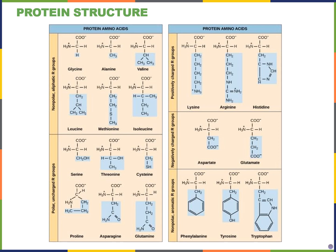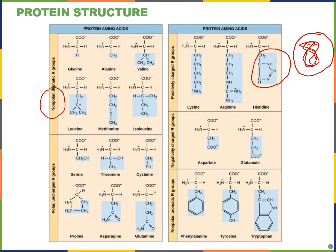Amino acids affect the three-dimensional folding of proteins because of the side chain or R group — shaded in blue for each amino acid. Remember that some were water-loving, charged (positively or negatively charged), and some were non-polar or water-fearing, meaning they're folded on the inside of a globular protein away from the aqueous environment. The type of amino acids in our proteins is determined by the nucleotide sequences in our messenger RNA, which are determined by the nucleotide sequences in our DNA.